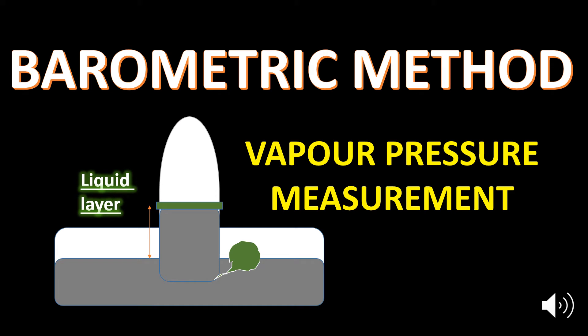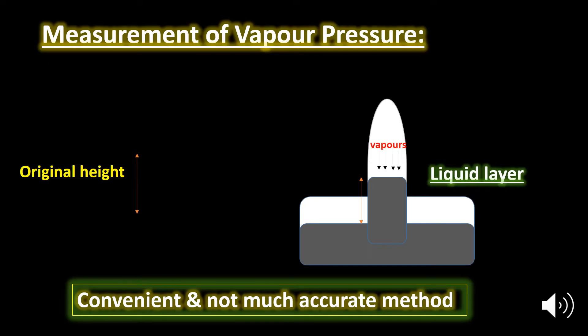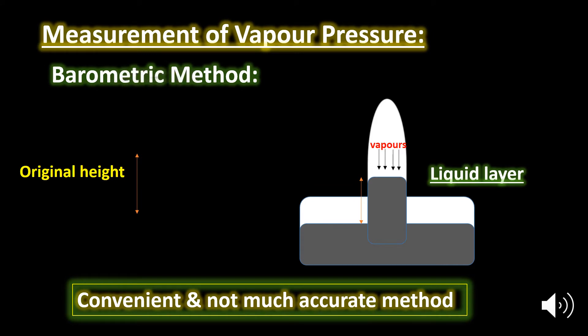Welcome to Digital Chemistry. Today's topic is the barometric method for the measurement of vapor pressure. Vapor pressure of liquids can be measured by two methods: the first is the barometric method and the second is the manometric method. We will discuss the first method, the barometric method.